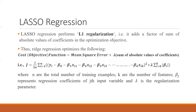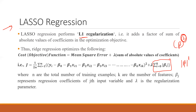Ridge is now covered, so let's move to Lasso, which is L1 regularization. In Lasso, nothing changes except instead of squaring the coefficients, we take their absolute value — power one instead of power two. The entire rest of the equation is exactly the same as Ridge. This is the basic equation of Lasso.